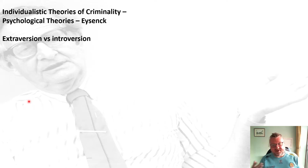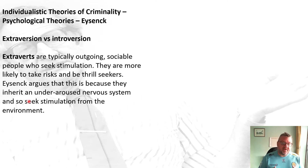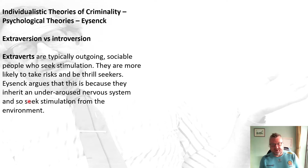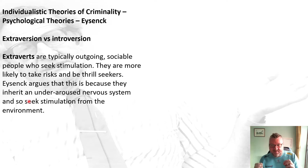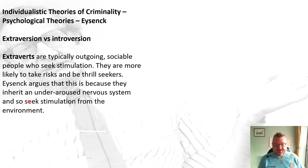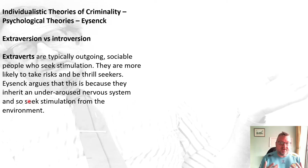Looking at extroversion first: extroverts are typically outgoing and sociable people who seek stimulation. Because of this, Eysenck believes they're more likely to take risks and be thrill-seekers. Eysenck says they are this way because they've inherited an under-aroused nervous system, and so, because the nervous system is under-aroused, they seek stimulation from the environment around them to get arousal.